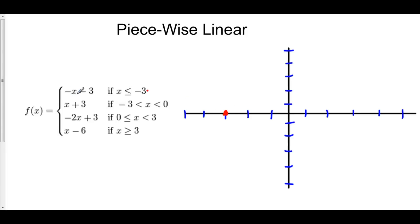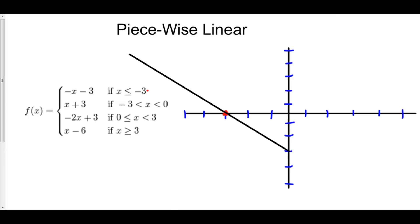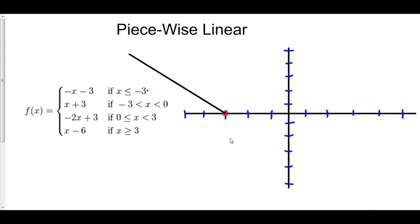If you think about this line, it has slope negative 1 and y-intercept negative 3. So we're looking at this line here. However, this line is only going to exist to the left of negative 3. Even though the line has domain all reals and spans the entire x-axis, here we're only defining it to the left of negative 3, which means everywhere else we're going to erase it. So here is the first part of this equation: from negative 3 and to the left, we're using this line.